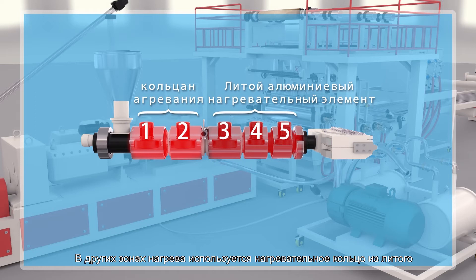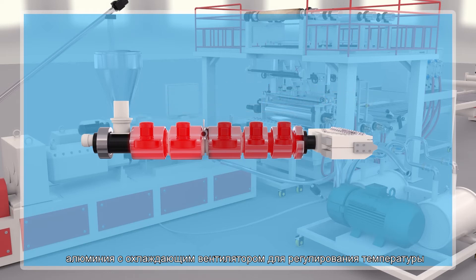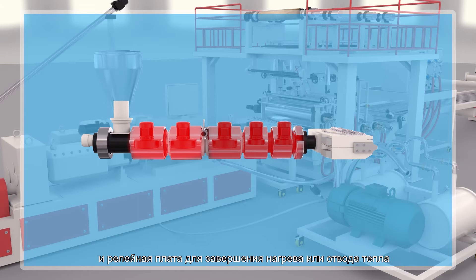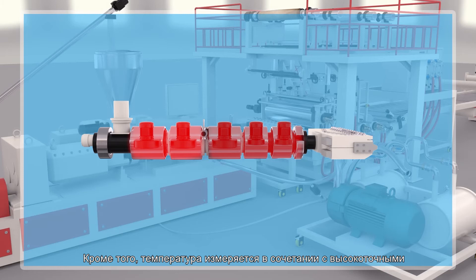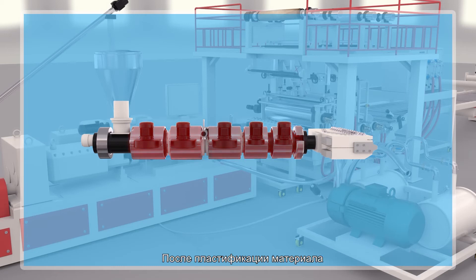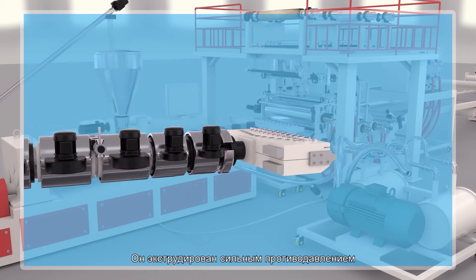In the other heating zones, casting aluminum heating coils plus radiator fan is used to control the temperature. For software, temperature control module plus relay board is used to complete the heating or heat dissipation output, which combines with high-precision small thermocouple for the temperature measurement.